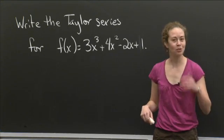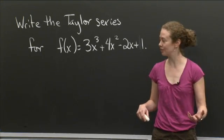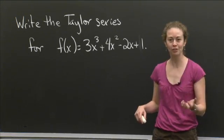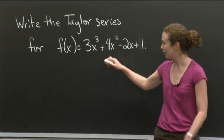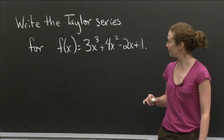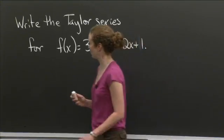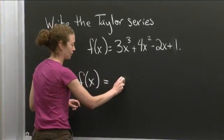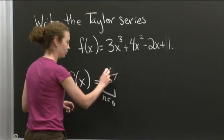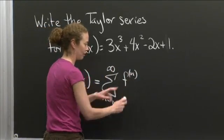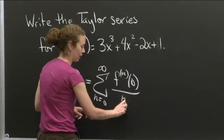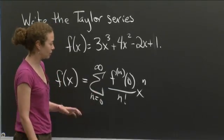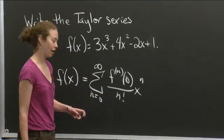So what I'm going to do is write down the expression for the Taylor series in general, and then start computing what I need. Let's remind ourselves what the formula is. f of x equals the sum from n equals 0 to infinity of the nth derivative of f at 0 over n factorial times x to the n. So that's what we want. I obviously need to start figuring out derivatives of f at 0.